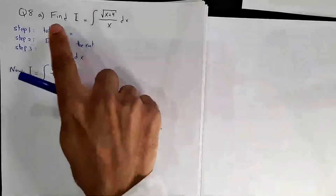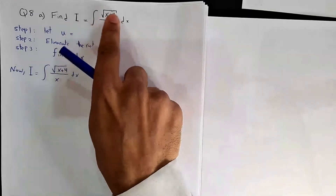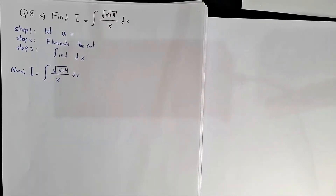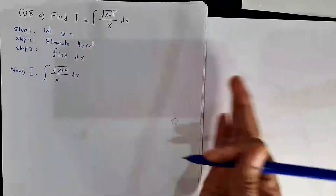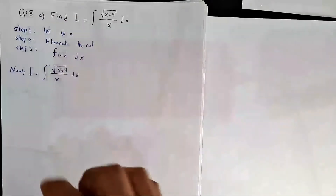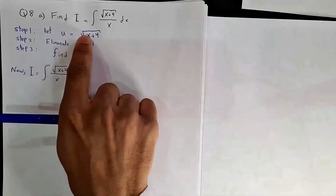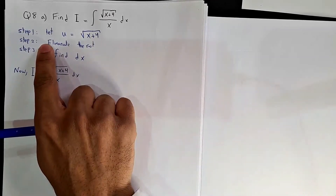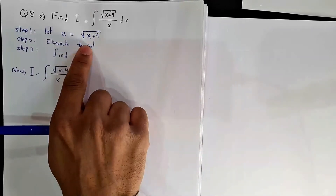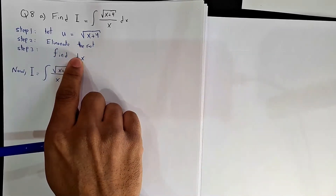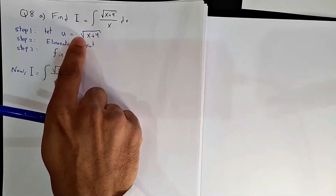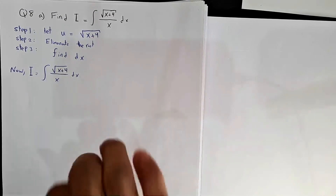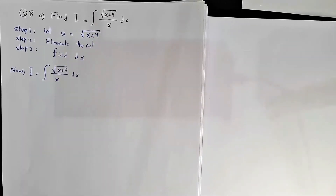Question 8a: find the integral of √(x+4) over x dx. As we said, we have a root, so it is recommended to take u equal √(x+4). After you take u equal the root, it is good to eliminate the root and then find dx from there. Otherwise, if you find du directly, you will get one over twice the root and you will have lots of roots.